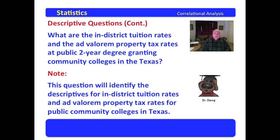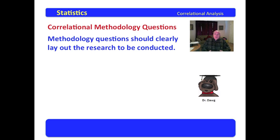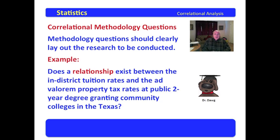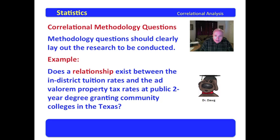Correlational methodology questions should clearly lay out the research to be conducted. Here's an example — read it carefully: 'Does a relationship exist between the in-district tuition rates and the ad valorem property tax rates at public two-year degree-granting community colleges in Texas?' Notice the parallel with the descriptive question: the descriptive looked at the descriptives for both variables, while the correlational question will examine a relationship. You could ask 'does an association exist?' or 'does a relationship exist?' — that's a cool question.